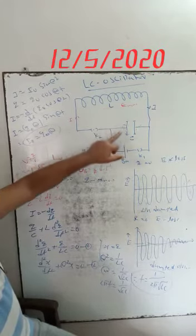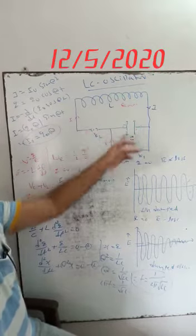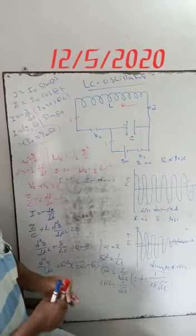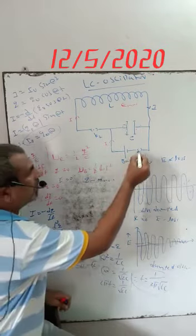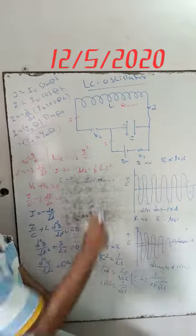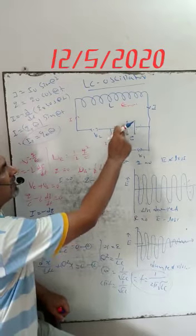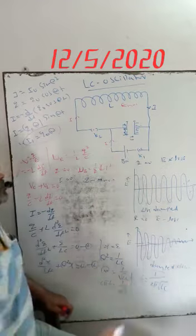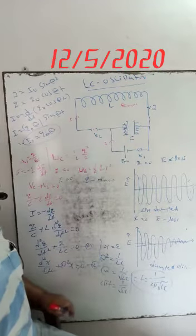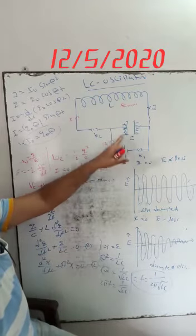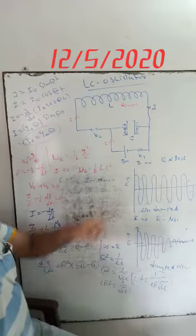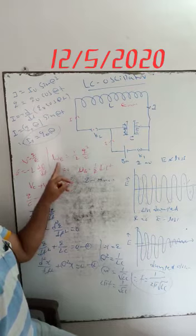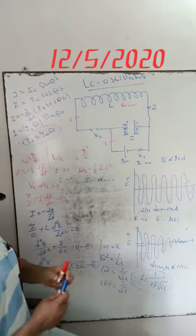The inductance of the coil, capacitor, and key K2 are connected in series. Across this capacitor, the battery and K1 are connected in series. If K1 is closed, current from the battery will pass and the capacitor will start to charge. The electrical energy goes on increasing. The equation for electrical energy in the capacitor is UE equal to half Q squared by C.